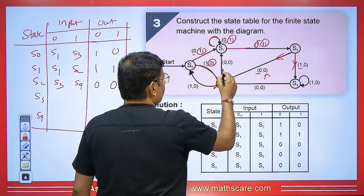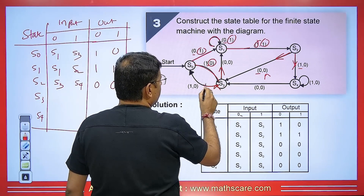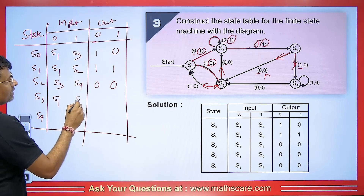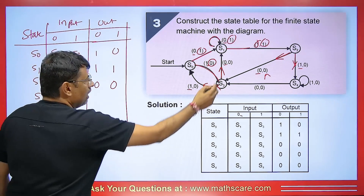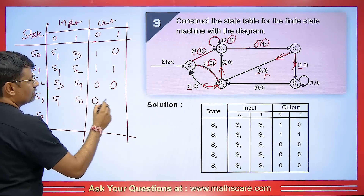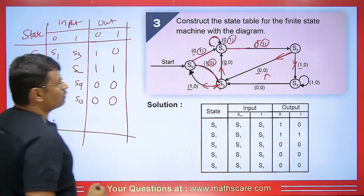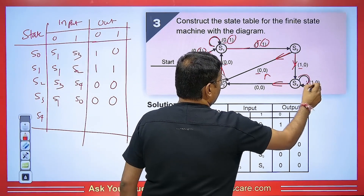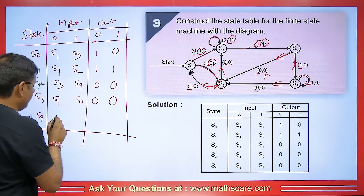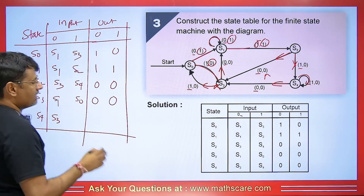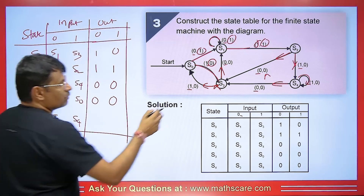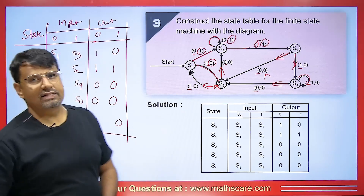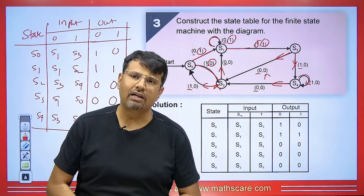For S3: it goes to S1 with input 0 and to S0 with input 1 — both outputs are 0,0. For S4: it goes to S3 with input 0 and makes a self-loop with input 1, both with outputs 0,0. There is a slight correction: pay attention to this arrow. This is how we make the complete table.